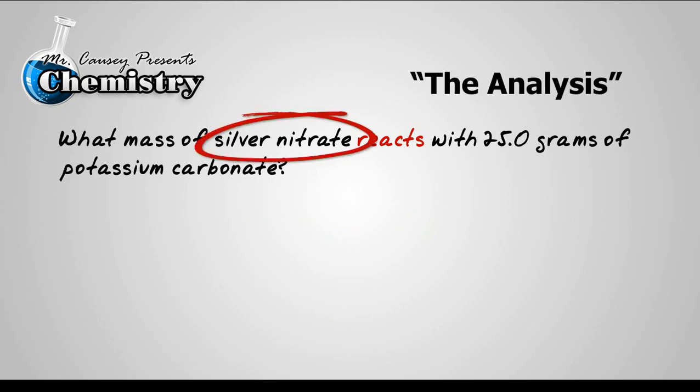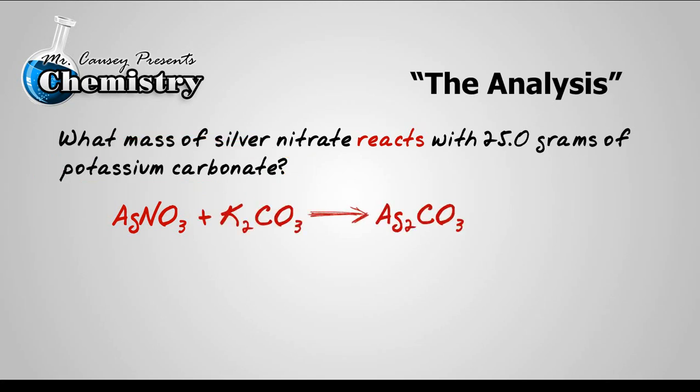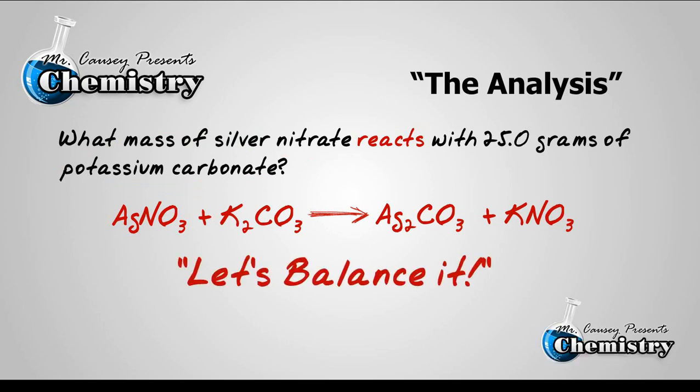We have silver nitrate, which is AgNO3, and we are going to react that with some potassium carbonate, which is K2CO3, and this produces silver carbonate and potassium nitrate. So there's our equation, and what we need to do is balance it.